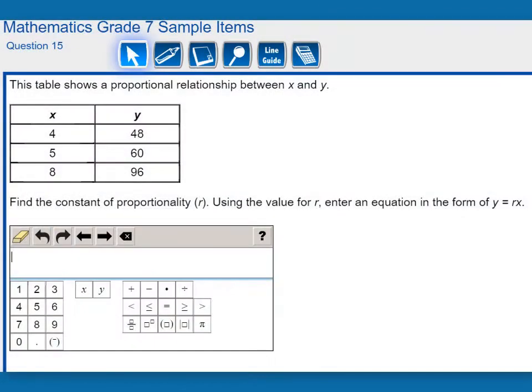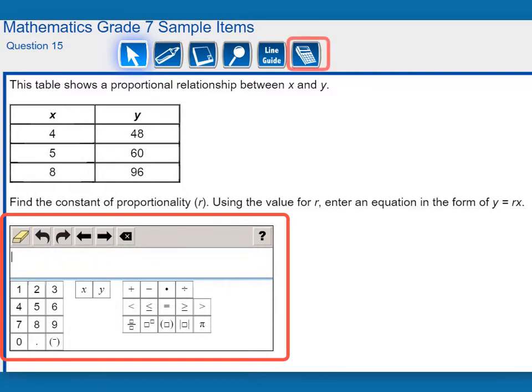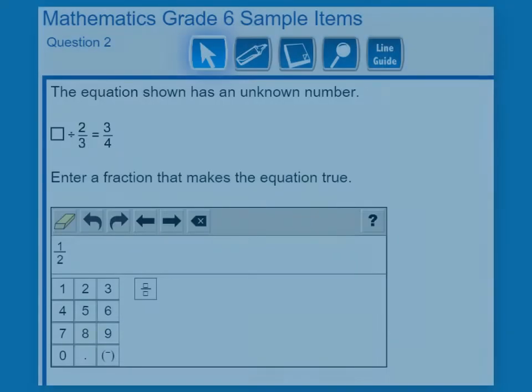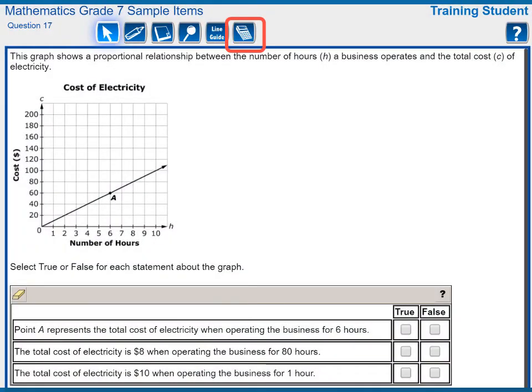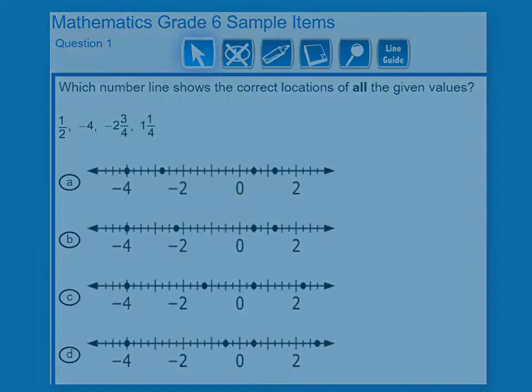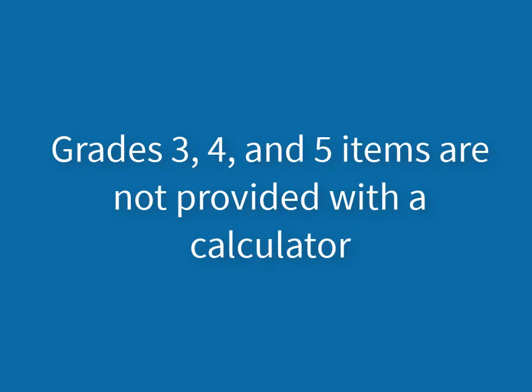Some items in grades 6 and 7 will have the keypad input and a calculator. Other items will have either the keypad input or the calculator, and some items will have neither tool. Students in grades 3, 4, and 5 will not be provided with a calculator at any time for any item, as the use of calculators at these grade levels changes the construct of the items and what they are intended to measure.